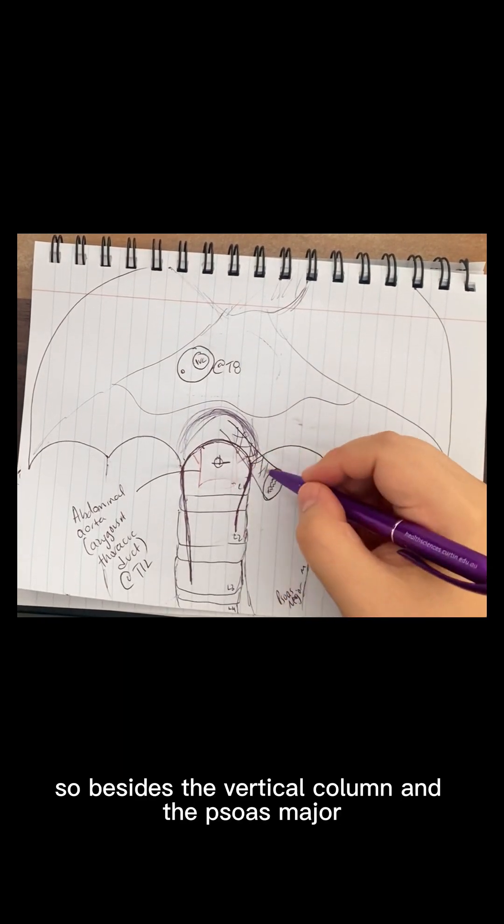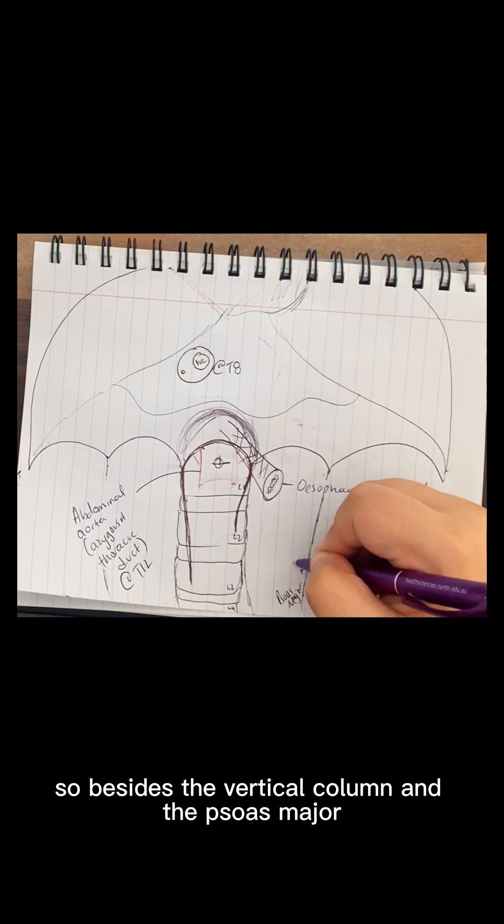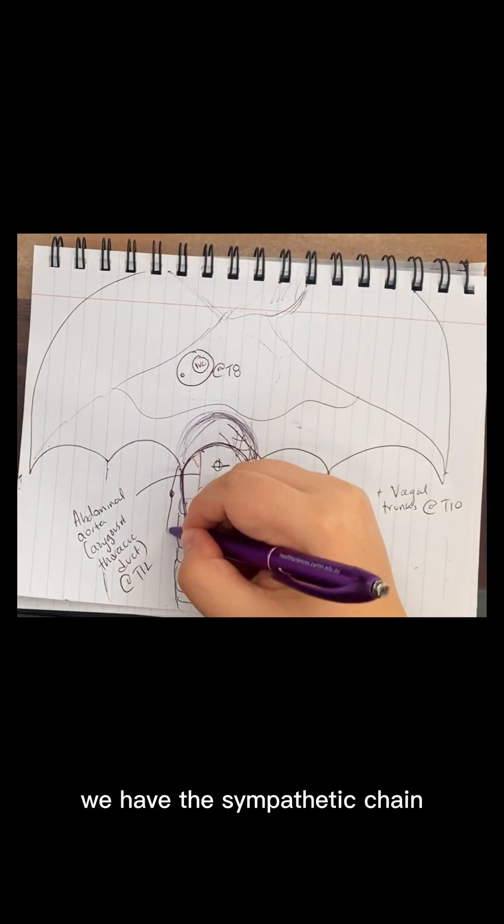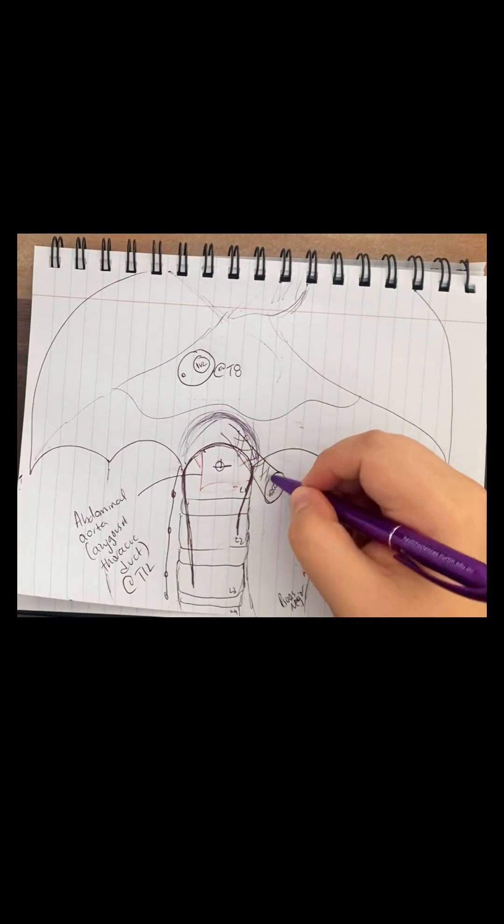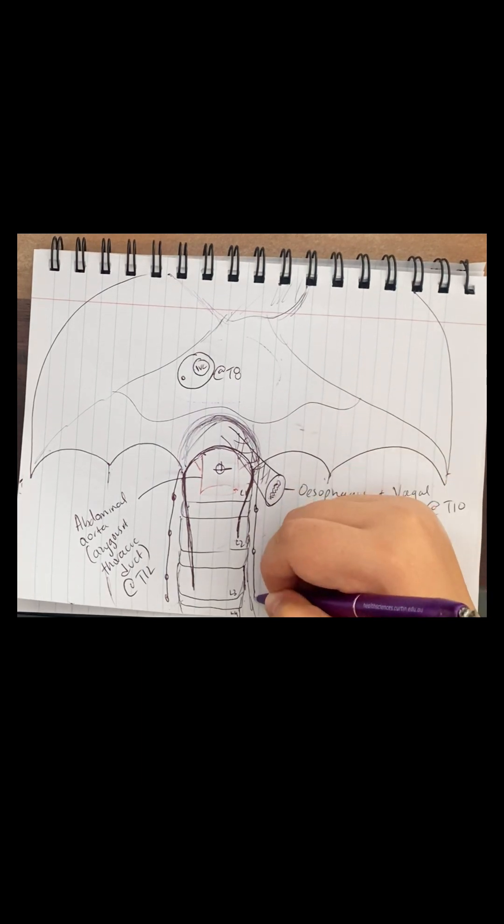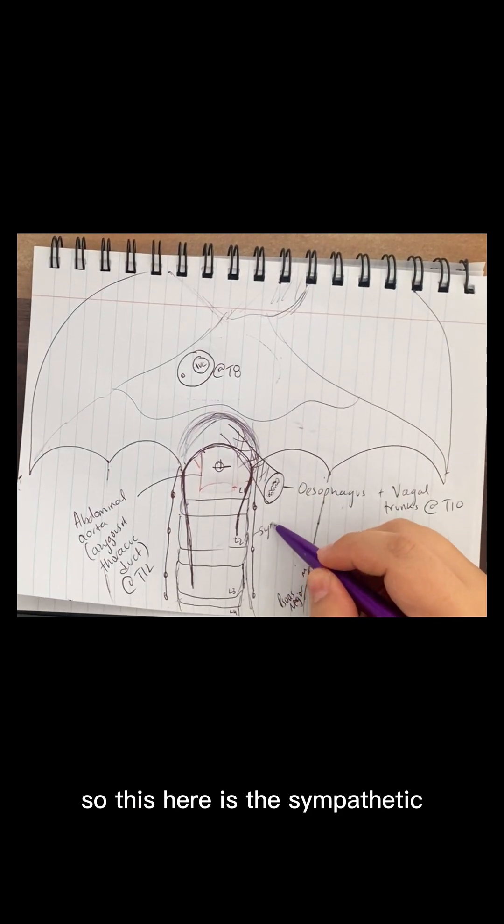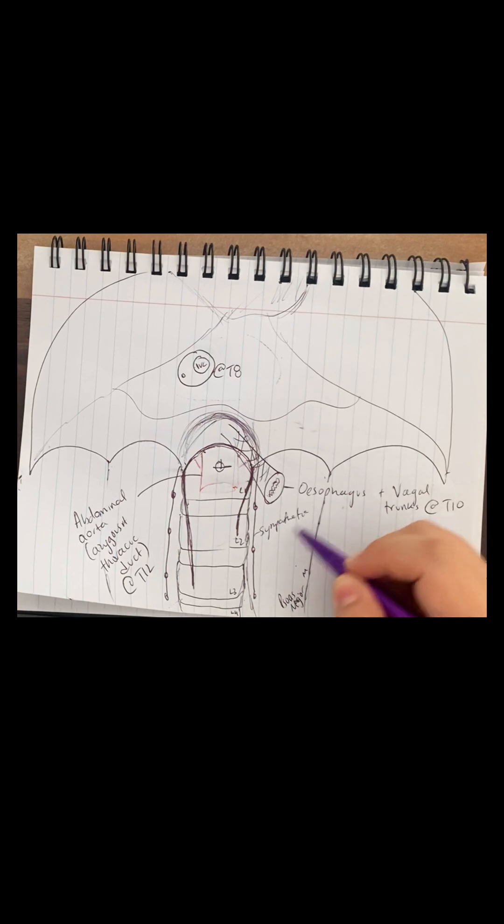And besides that, so besides the vertebral column and the psoas major, we have the sympathetic chain with the sympathetic ganglia. So this here is the sympathetic chain.